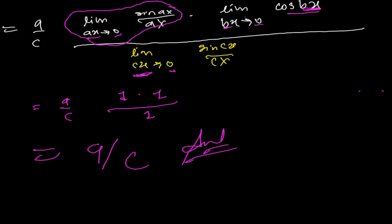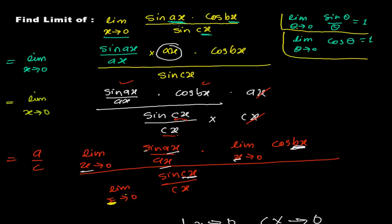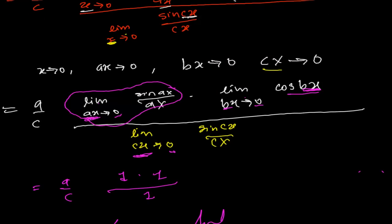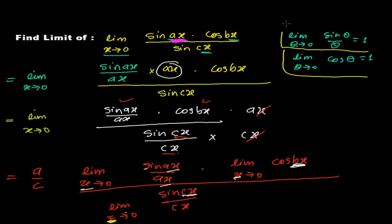This is how you need to solve the problem according to the situation and the demand of the angle of the trigonometric function. The angle of sine was ax, so I changed the limit to ax tends to zero to match the standard result, since sine angle over angle equals one only when angle tends to zero. I hope you understand how to change the limit depending on the demand of the trigonometric ratio. If you have any doubts, please comment or mail me, and we'll meet in the next video with more problems before jumping to derivatives.